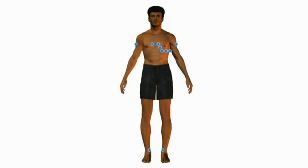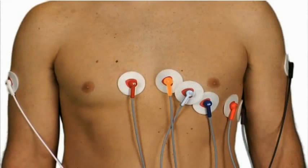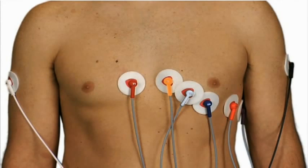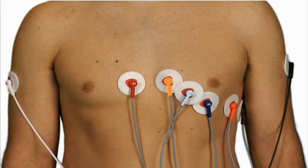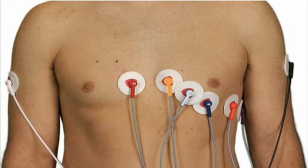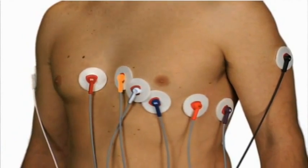The 12-lead ECG is obtained from 10 electrodes: 4 on the limbs and 6 on the chest. We will first identify the proper landmarks for electrode placement, then discuss how to find those landmarks. Proper electrode placement is very important. Here is an overview of the chest electrodes and their proper position.